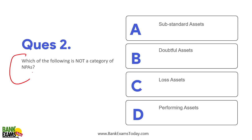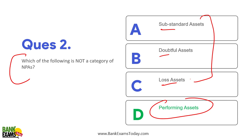Which of the following is not a category of NPA? There are substandard assets, doubtful assets, and loss assets. But a performing asset is not an NPA — a performing asset is one which is generating income. So the three kinds of NPAs are substandard, doubtful, and loss assets.